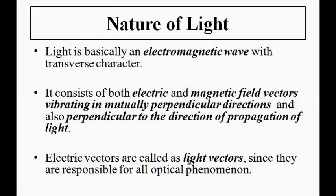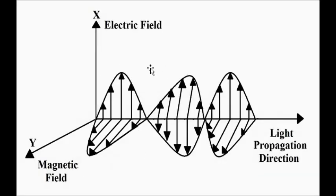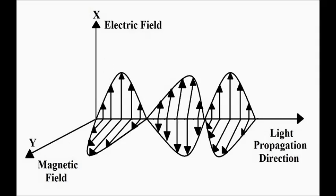The electric vector always comes into play when any optical phenomena is discussed, especially in optoelectronics. You can visualize the basic nature of the light wave in terms of three coordinate axes — x, y, and z. If you take the z-axis as the direction of propagation of light, then the x-axis represents the electric field and the y-axis represents the magnetic field — three mutually perpendicular directions.